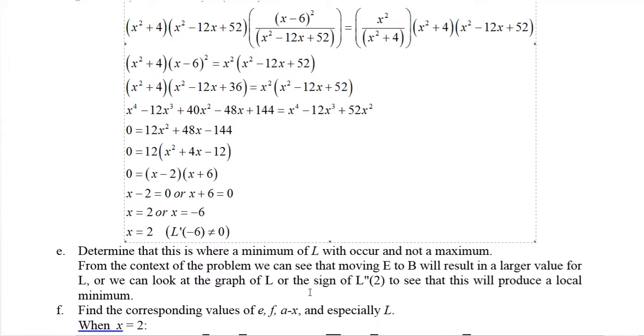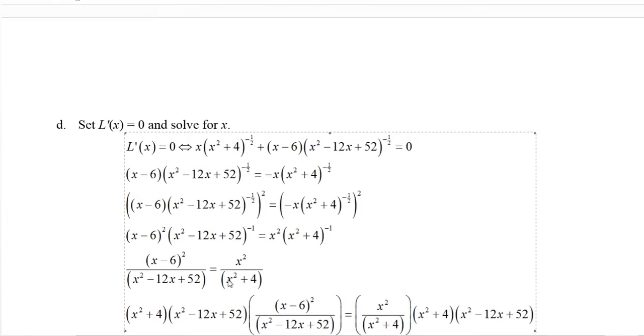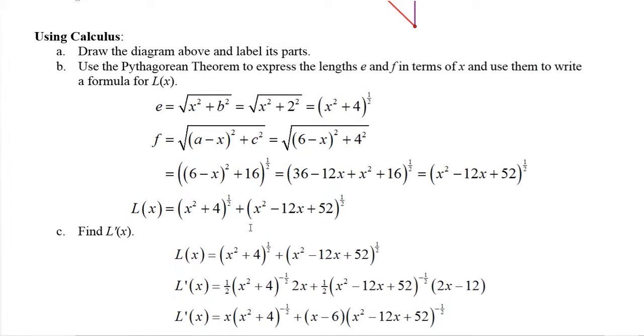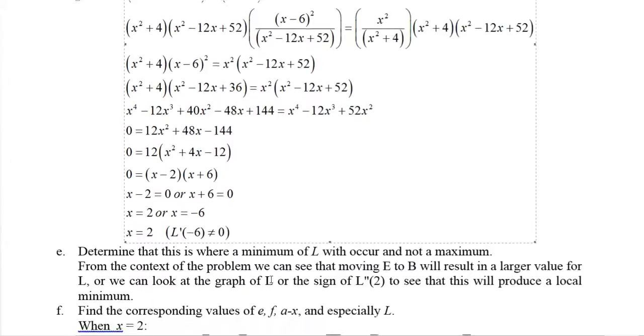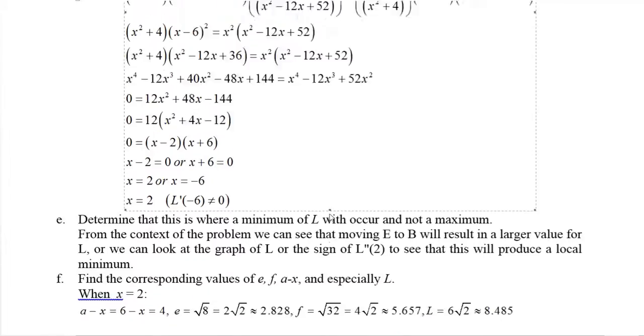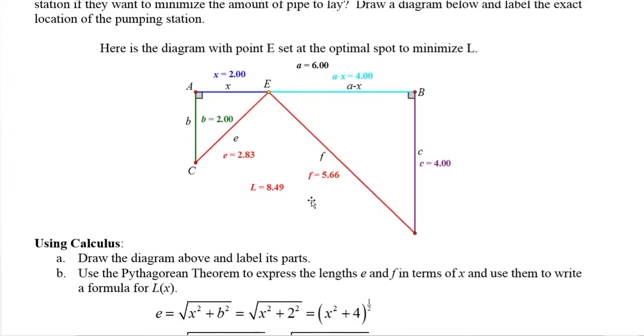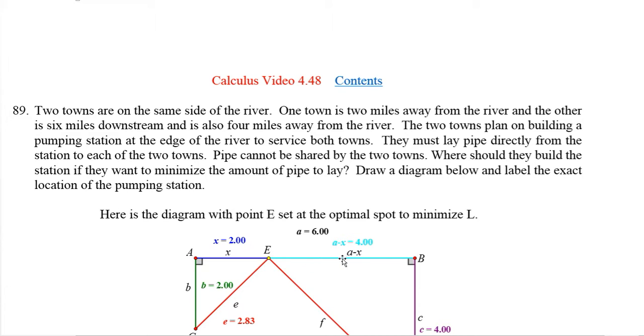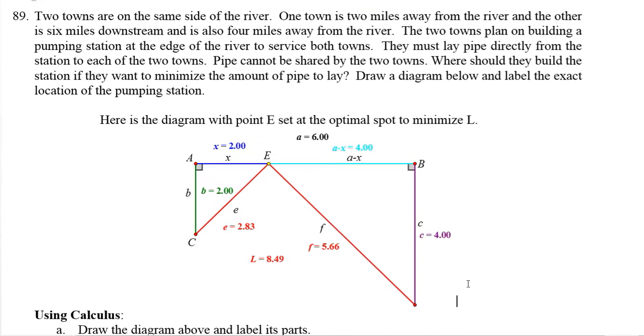From the context of the problem, we can see that this will be a minimum. We can either graph the derivative or the original function and just see that it's a minimum, or you can find it's a minimum by doing a minimum on your calculator. We could also just look at the problem and realize that if we go over here further, particularly if we go way over here at the endpoints, which you should check by the way.